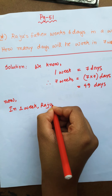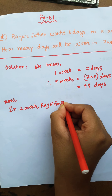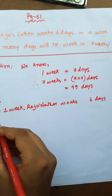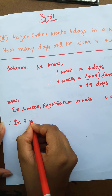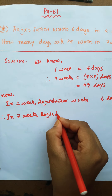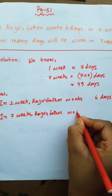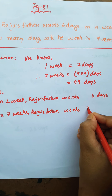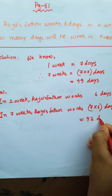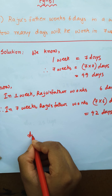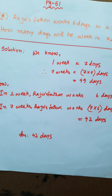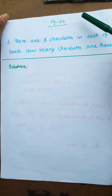In 1 week, Raju's father works 6 days. Therefore, in 7 weeks, Raju's father works 7 into 6 days, which is 42 days. So the answer is 42 days.